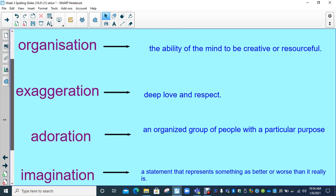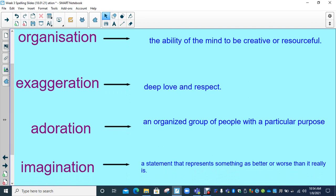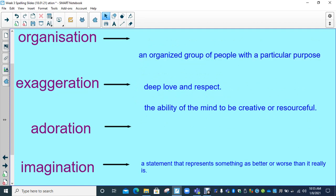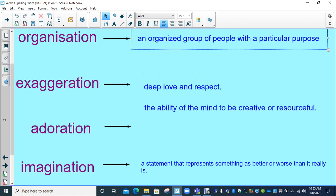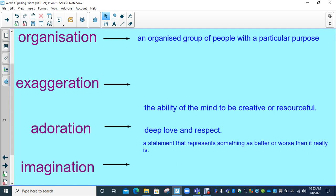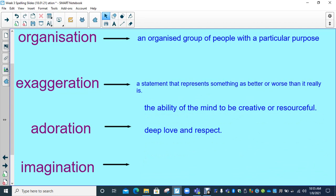Then we've got another four more over here. We've got organisation, exaggeration, adoration, and imagination. Can you unscramble the definitions with the words? Pause the video and have another go. We've got organisation. An organised group of people with a particular purpose. Exaggeration. A statement that represents something as better or worse than it really is. When you're over-exaggerating.